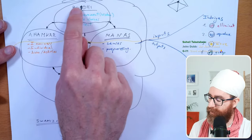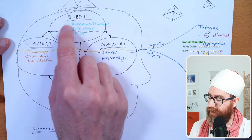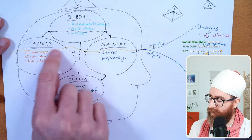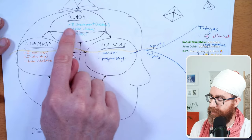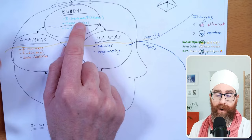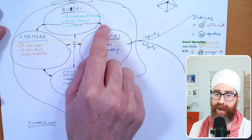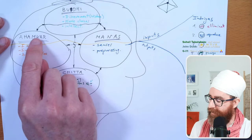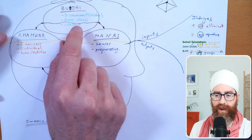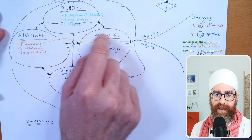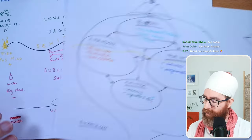Buddhi is discernment, wisdom, and intellect — and similar to neutral mind, it is often asleep. When buddhi doesn't discern clearly, it stays paralyzed, doesn't receive intuition, can't see which option is best, and fails to make choices. Then ahankar ends up commanding manas. Buddhi needs to be awake, alert, and open to intuition so we can align ourselves and decide consciously.